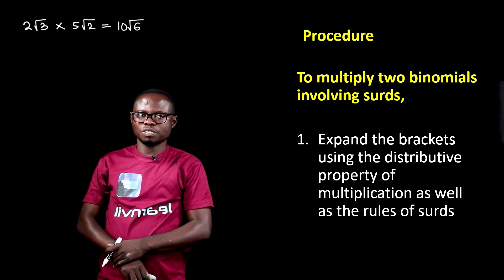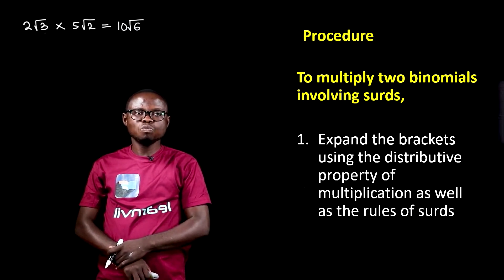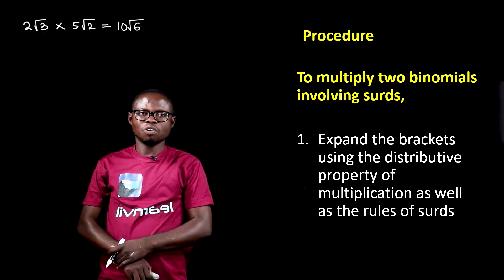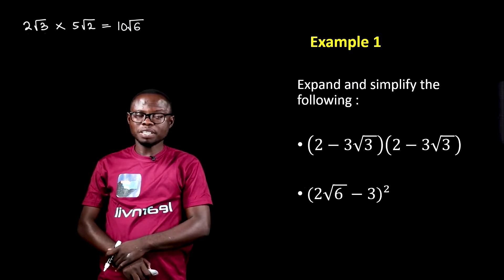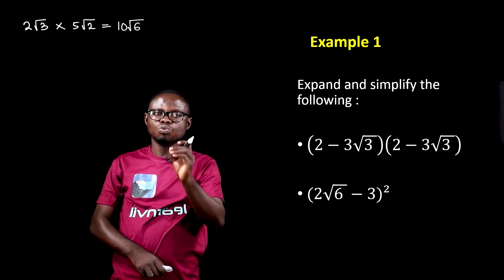Our focus is now on how to multiply two binomials involving surds. Basically, a binomial is a term made up of two terms.